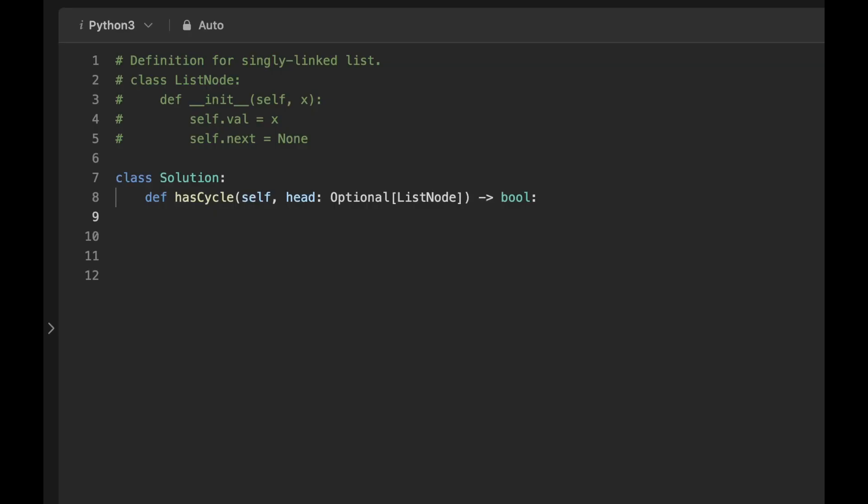Okay, let's try some code now. So we need to initialize our two pointers, slow and fast. And they both can start at the head of the linked list. Next thing we need is a while loop. So while fast is not null and fast.next is not null, we want to move the slow pointer by one position and the fast pointer by two positions.